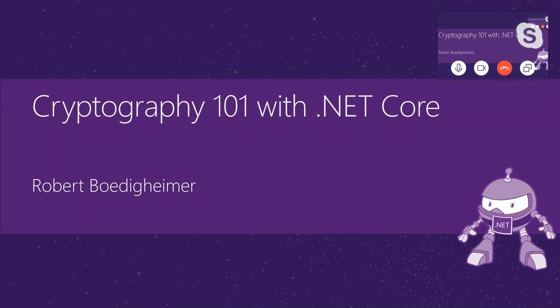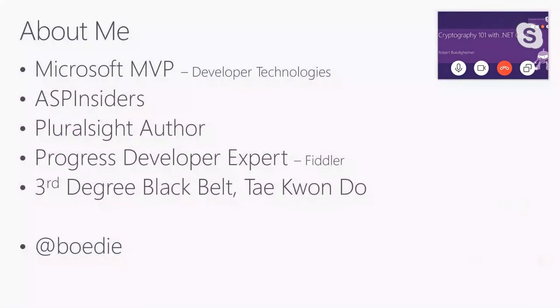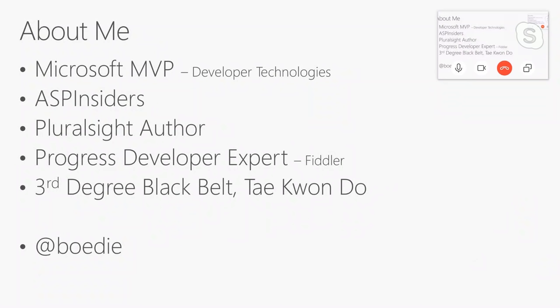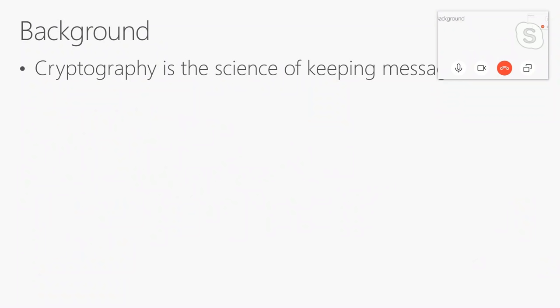Let's dive in. We're going to talk about Cryptography 101 with .NET Core. The principles we'll talk about — cryptography, you can use any platform. They're very familiar algorithms and things that you can take advantage of, but we're going to focus on the implementations in .NET Core. I'm a Microsoft MVP, part of the ASP Insiders, Pluralsight author, Progress Developer Expert, and Fiddler. That's my Twitter handle. So let's get started.